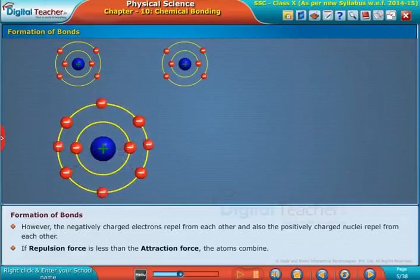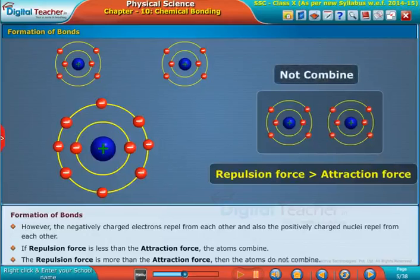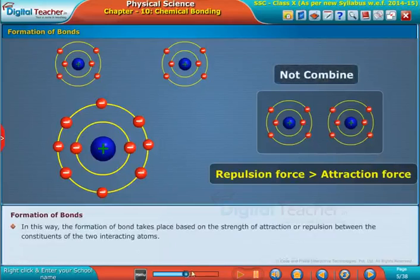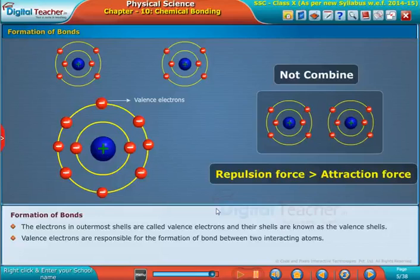If the repulsion force is more than the attraction force, then the atoms do not combine. The electrons in outermost shells are called valence electrons, and their shells are known as the valence shells. Valence electrons are responsible for the formation of bonds between two interacting atoms.